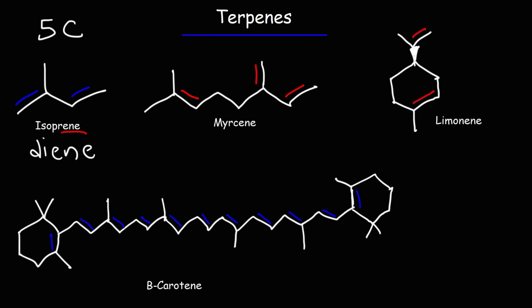Other examples of terpenes include myrcene and limonene, which is found in the peels of citrus fruits. And then we have beta-carotene. So this is found in carrots. Myrcene has 10 carbon atoms. So therefore, it has two, it's made up of two isoprene units. So terpenes typically have carbon atoms that are multiples of five.